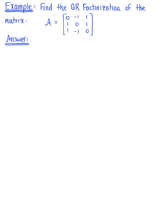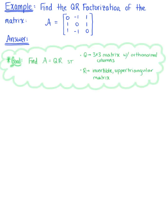Find the QR factorization of the given three-by-three matrix A. The goal is to rewrite matrix A as the product of matrix Q and matrix R, where matrix Q is a three-by-three matrix with orthonormal columns, and matrix R is an invertible upper triangular matrix.